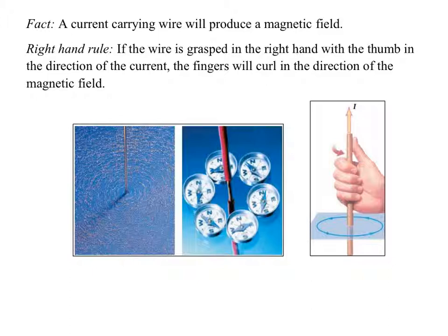If you take iron filings and get a wire connected to a battery so there's a current flowing through it — you probably want to put a resistor or a bulb in there too — and get that wire to cut through a table by drilling a hole through a piece of plywood, then put iron filings on the table and run a current through it, the iron filings will form concentric circles showing the magnetic field produced around the wire.